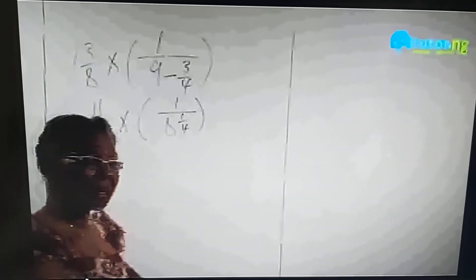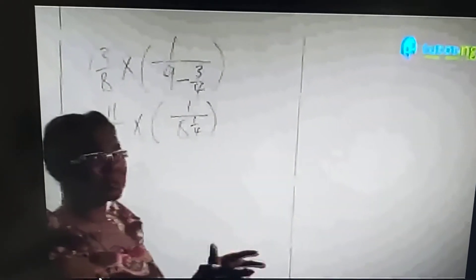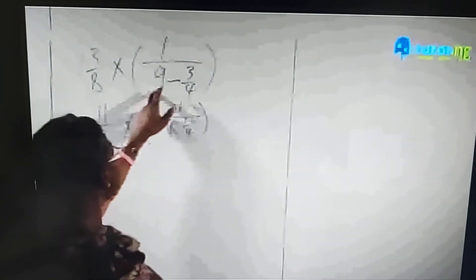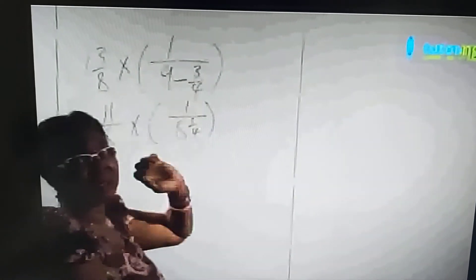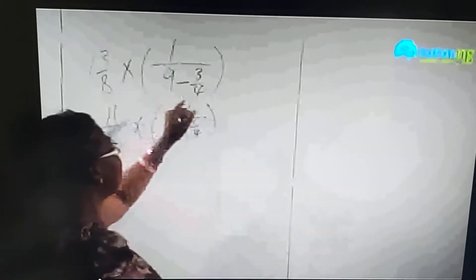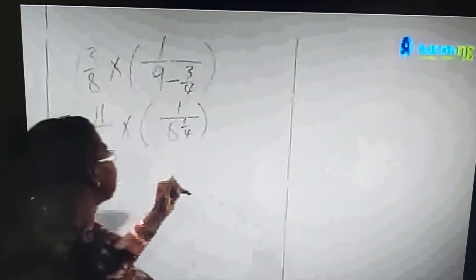Take that one away from the nine, we're left with 8 1/4. Now this again changes to improper fraction, so we now have 11/8 times the reciprocal.